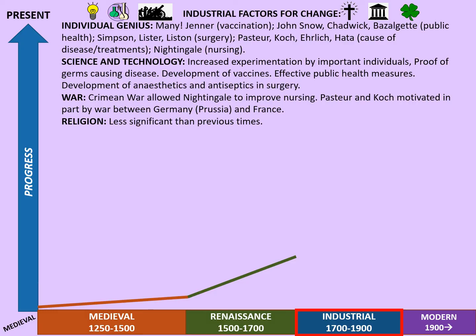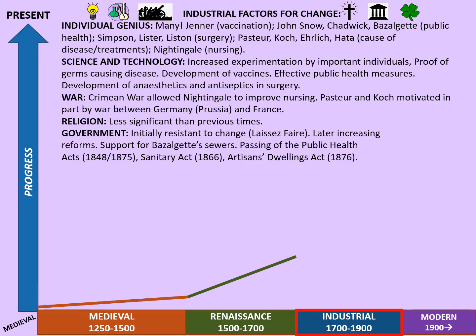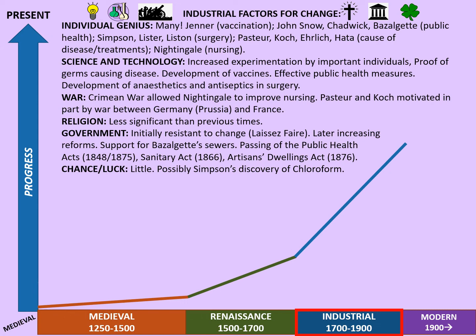Religion is less significant than in previous times, as people are looking for scientific explanations for disease rather than simply praying. Government becomes increasingly important as society becomes more sophisticated and complex. Governments were initially resistant to change — known as laissez-faire or leave-alone, do-nothing politics — but later there are increasing reforms: support for Bazalgette's sewers paid for out of government coffers, the Public Health Acts of 1848 and 1875 (the first voluntary, the second compulsory), the Sanitary Act of 1866, and improvements to housing with the Artisans' Dwellings Act of 1876. Chance and luck plays only a small role; possibly Simpson's discovery of chloroform, though he was actually looking for an anaesthetic so it can't truly be all about chance.